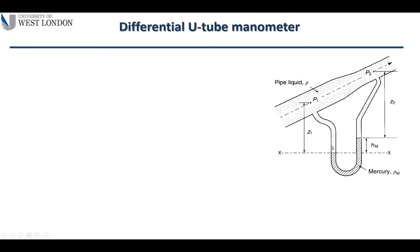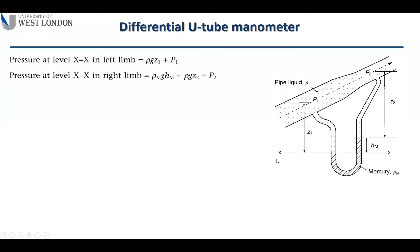The pressure difference causes a difference in the mercury levels. The pressure at the left limb is higher, pushing the mercury down on that side. If the flow is running from top to bottom instead, the mercury difference is vice versa — the right limb level will be lower.